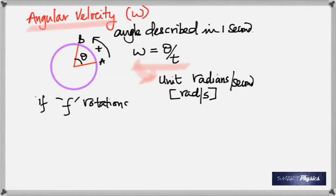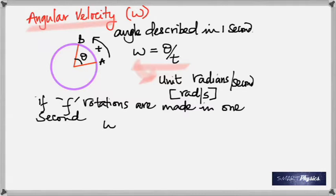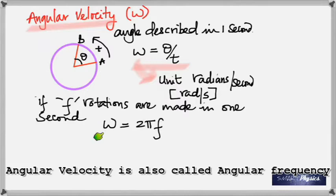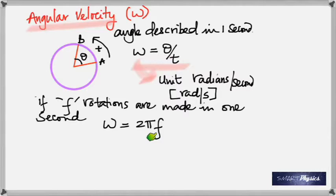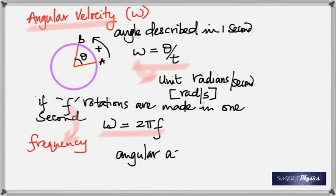If an object makes f rotations in one second, that f is called frequency — the linear frequency. If f rotations are made in one second, the relation is omega equals 2πf. So that's the relation between angular velocity (also called angular frequency) and linear frequency. Frequency is also one over the time period.